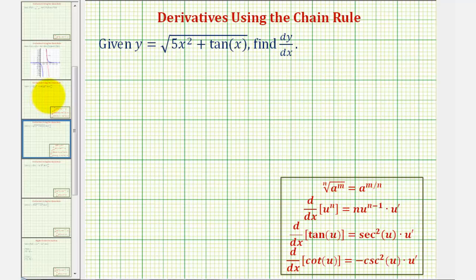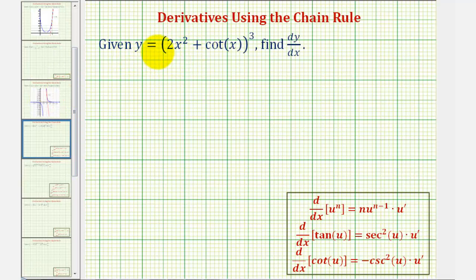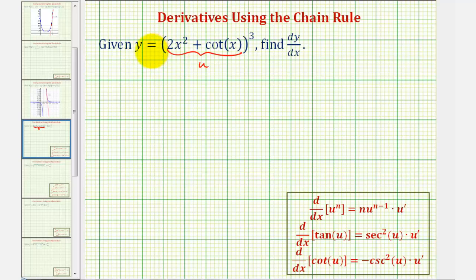Going back to our first example, the first thing we should recognize is that we have a composite function, and therefore to find the derivative we'll have to apply the chain rule. When applying the chain rule, the first step is to identify the inner function. In this case, the inner function would be two x squared plus cotangent x, which means we can think of this as y equals u to the third, and then apply the extended power rule.